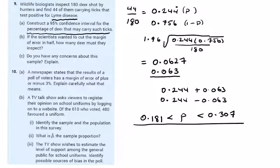The scientists wanted to cut the margin of error in half, how many deer must they inspect? I think we had this one already. If they cut the margin of error in half they must multiply n by 4. And do you have any concerns about the sample? It's definitely quite small, the sample is small at 180.